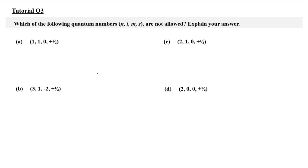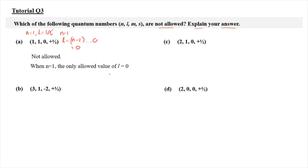For tutorial question 3, which of the following quantum numbers n, l, m, s are not allowed, and we need to explain the answer. For A, we have 1, 1, 0, and plus half. When n is equal to 1, the l value of 1 is not acceptable, because when n equals 1, l must be n minus 1, which is 0. So l can only be 0. This is not allowed, and the reason is when n equals 1, the only allowed value of l is 0.